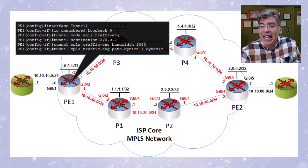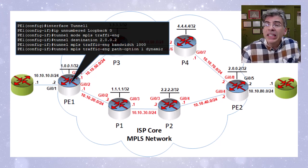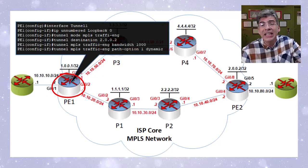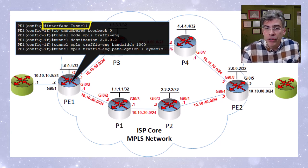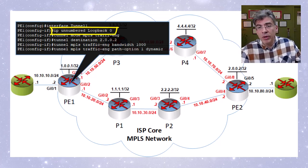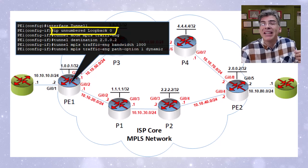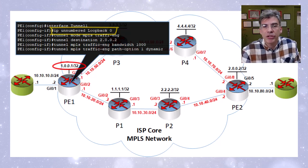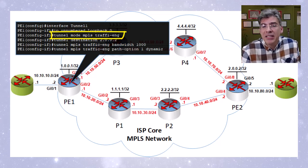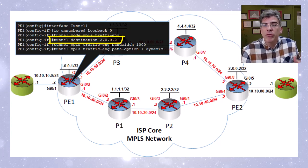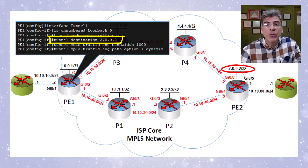Finally, we come to the point where we can create our tunnel interface on PE1. Because these LSP tunnels are unidirectional, we only need to configure the tunnel at the ingress LSR. We create the tunnel interface and enter tunnel interface configuration mode. We issue an IP address — rather than assigning a specific IP, the tunnel adopts the IP address of loopback zero, which is 1.0.0.1/32. We specify the tunnel type as MPLS traffic engineering, set the tunnel destination to 2.0.0.2 (our PE2 router), which is reachable because OSPF has fully converged.